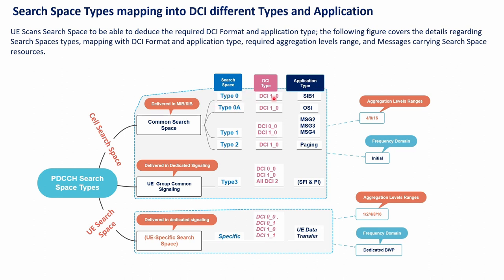DCI types are: format 0 for uplink resource allocation, format 1 for downlink resource allocation, and format 2 for common group signaling such as paging, SFI indicators, and pre-emption indicators. The common search space requires a minimum aggregation level of 4, while UE-specific search space can use aggregation levels from 1 and 2 up to 16. Common search space is transmitted in the initial bandwidth part, while UE-specific is in the dedicated bandwidth part.